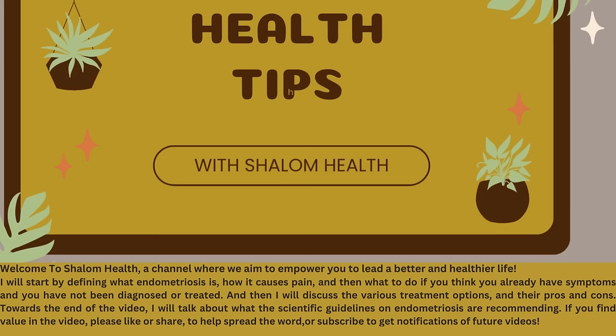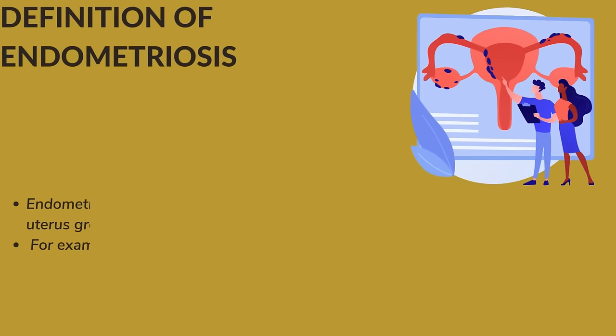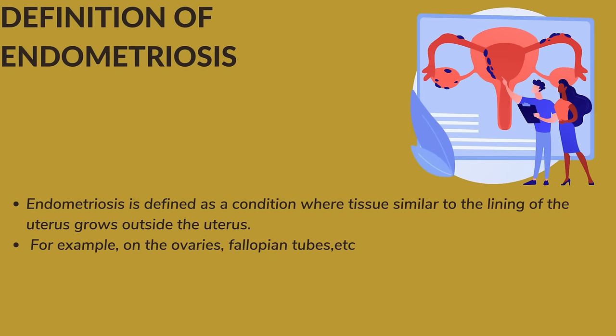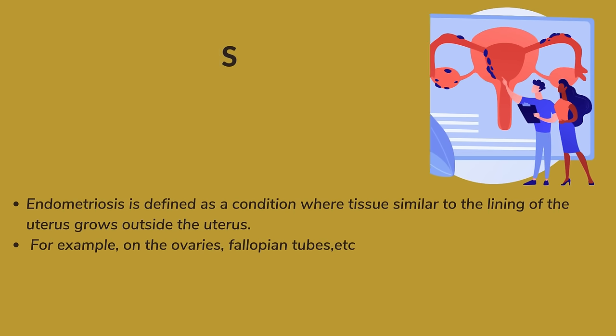Definition of endometriosis: Endometriosis is defined as a condition where tissue similar to the lining of the uterus grows outside the uterus — for example, on the ovaries, fallopian tubes, and so on.